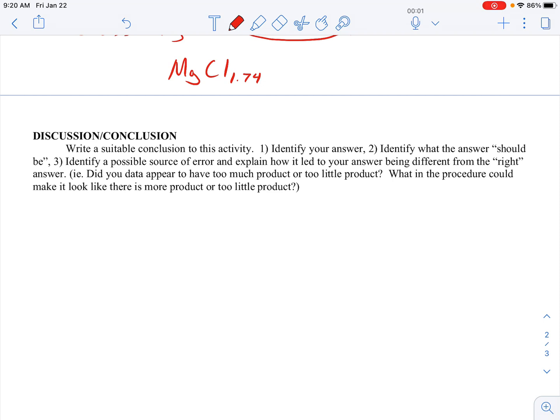And then identify a possible source of error. Explain how it led to your answer being different from the right answer. Did your data appear to have too much product or too little product? In this case, it appears as though my product is too little. So what in the procedure could have made it look like there's too much product or too little product? In this case, I had too little product. And so really, there's two errors that can happen.